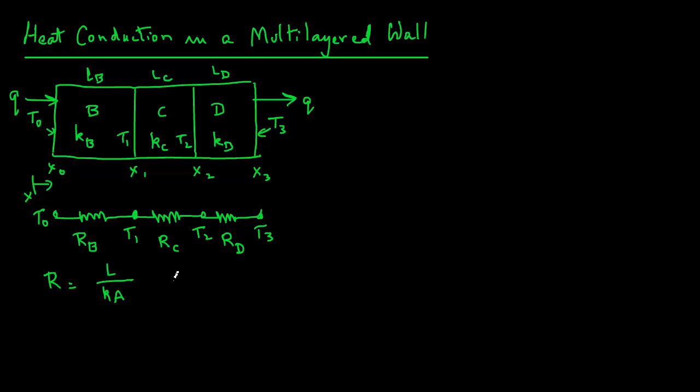So we will go ahead then and write the thermal resistance values for each of these layers. So we will have RB equals LB over KBA. RC will be LC over KCA. And RD will be LD over KDA.